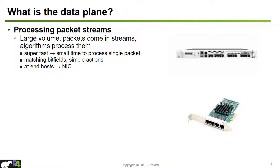Different data plane implementations run in different devices. For example, if there's a data plane running at the end host, it is typically run in a network interface card, also called NIC. If they run inside a network, they can run at different devices such as routers, switches, or firewalls, which also process the packets.